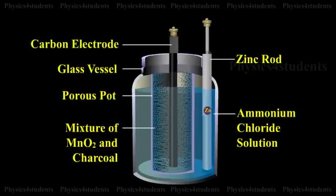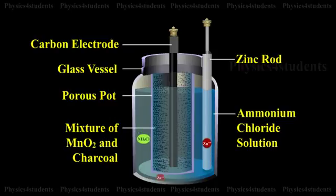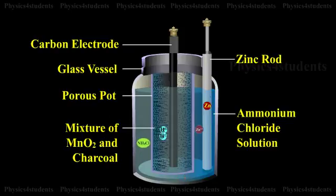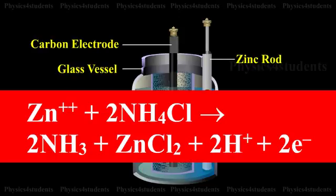At the zinc rod, due to an oxidation reaction, zinc atoms are converted into zinc ions and two electrons. Two zinc ions reacting with ammonium chloride produce zinc chloride and ammonia gas: Zn + 2NH₄Cl → 2NH₃ + ZnCl₂ + 2H⁺ + 2e⁻ (two electrons).